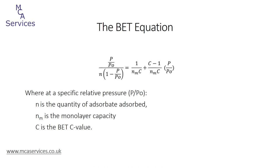The occurrence of multilayer adsorption is recognized and accounted for in the BET theory, named after its creators Brunauer, Emmett and Teller. That gives us the BET equation, shown here in one of its common forms. Note that we want to solve this for the monolayer capacity nm, but also note the occurrence of c — the BET c value. This is a constant in the BET equation, but it is of importance when we determine the relative pressure range to be applied, and we will come back to the BET c value a little bit later.